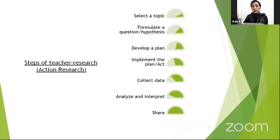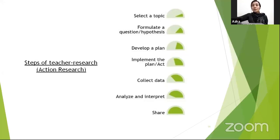These are the steps of action research. First: select a topic. Then formulate a question. Develop a plan. Implement the plan. Collect the data. Analyze and interpret. And then share. I have just mentioned the names here, but in the next slides we will study each step in detail.